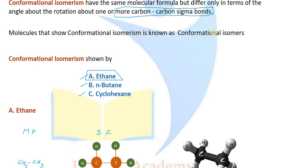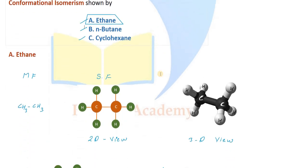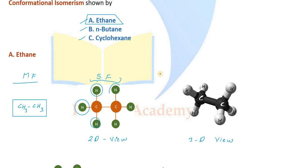Let's start with ethane, which has the molecular formula C2H6. If we need to draw the 2D structural formula, we have two carbons each bonded to three hydrogens.